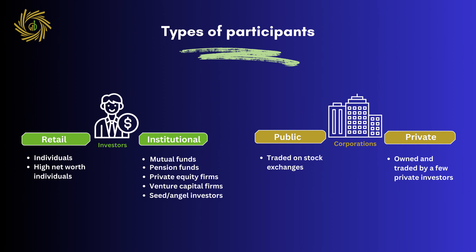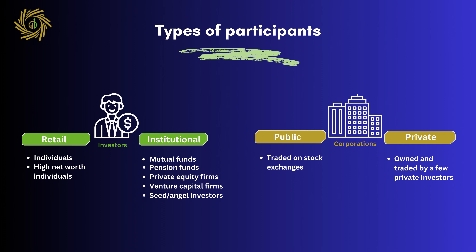Let's take a closer look at the different types of participants in the capital markets. As previously mentioned, we have two main categories: investors and corporations. Investors can be further classified into two categories: retail and institutional. Retail investors are individuals, including high net worth individuals, while institutional investors include mutual funds, pension funds, private equity firms, venture capital firms, and angel investors. Institutional investors may represent individual investors as well.